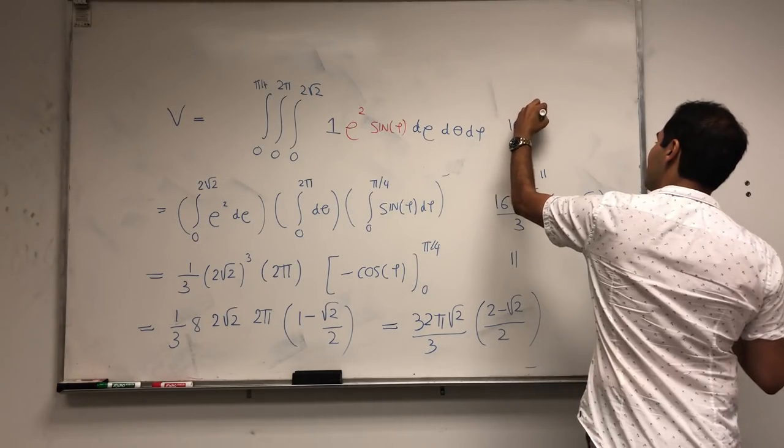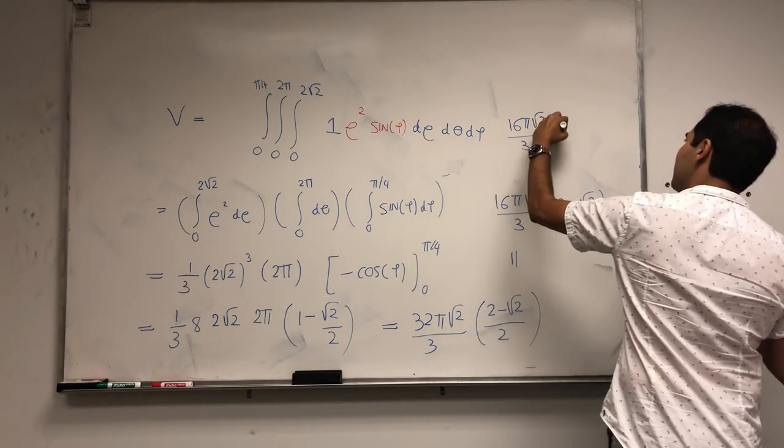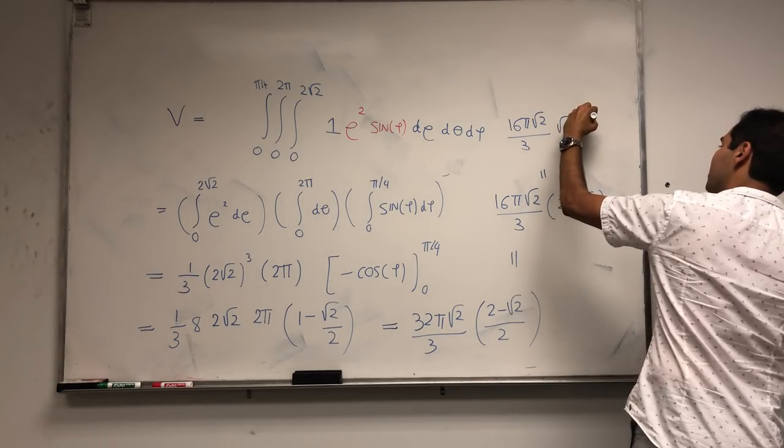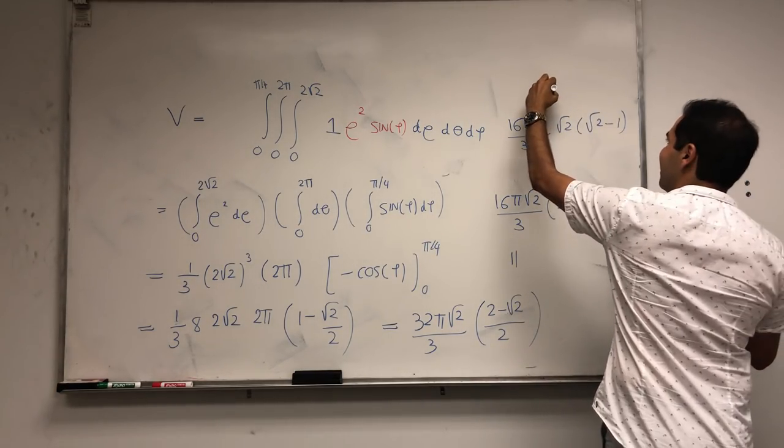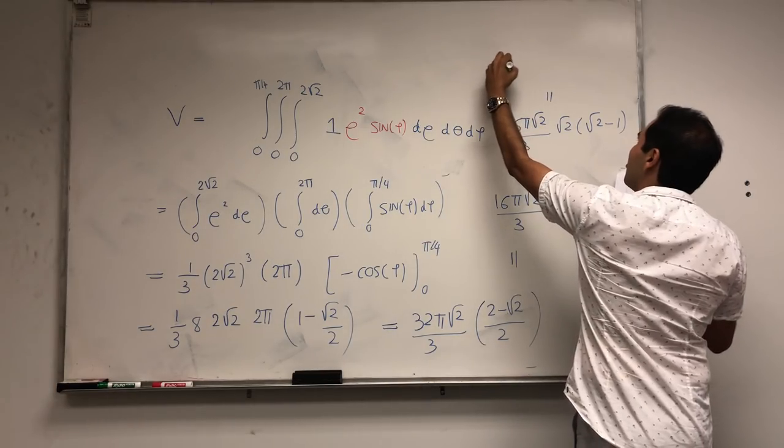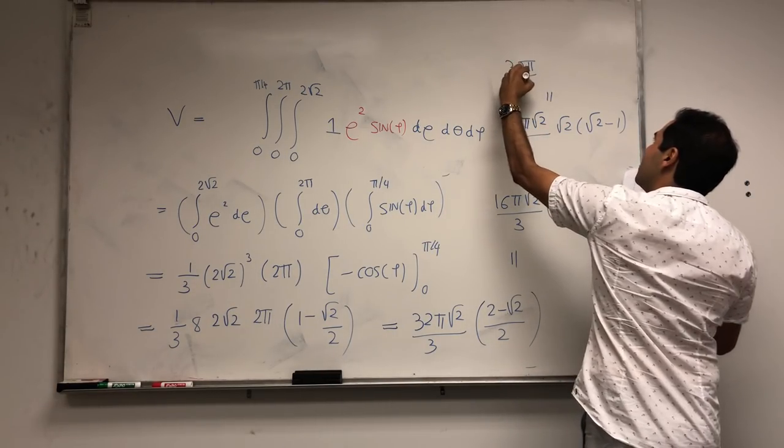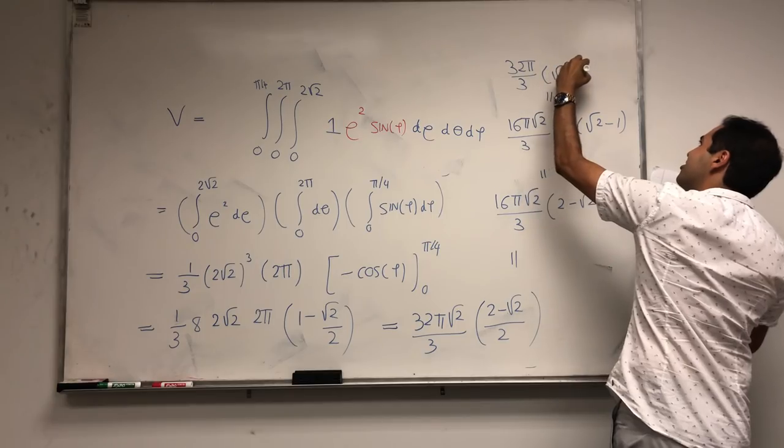Almost the answer I gave before, except I think you can just factor out the square root of two, so 16 pi square root of two times square root of two minus one, and yes, that becomes 32 pi over three times square root of two minus one.